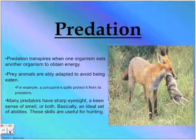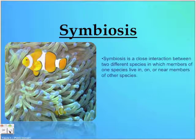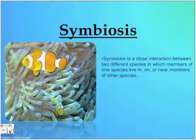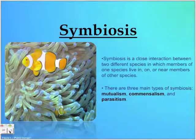Basically, an ideal set of abilities — these skills are useful for hunting. Symbiosis is a close interaction between two different species in which members of one species live in, on, or near members of other species. There are three main types of symbiosis.